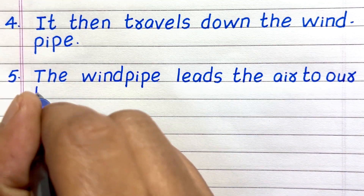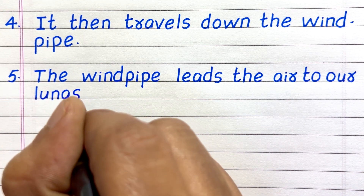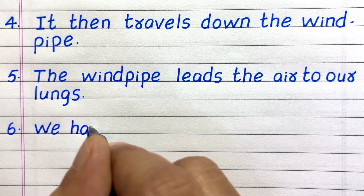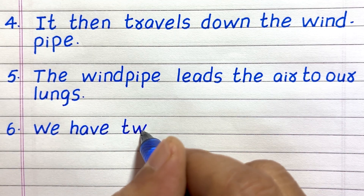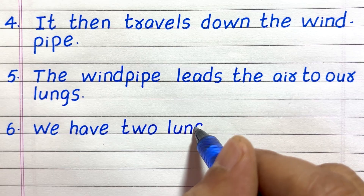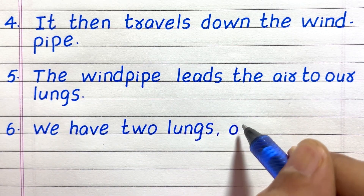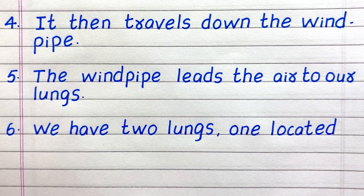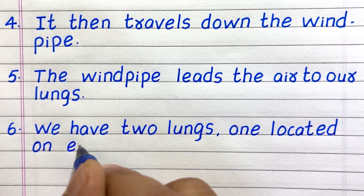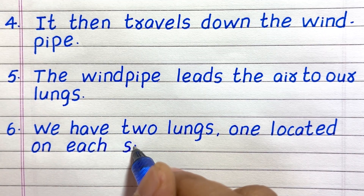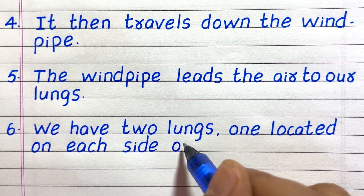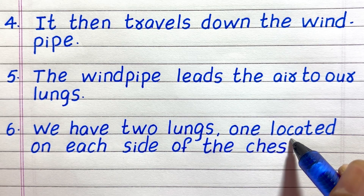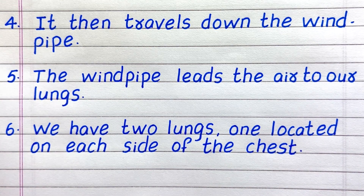Line 5: The windpipe leads the air to our lungs. Line 6: We have two lungs, one located on each side of the chest.